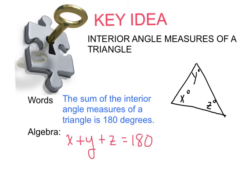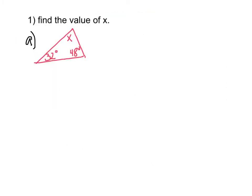So let's do three examples. Example number one, we're going to find the value of x. In example A, we have two angle measures which are 32 degrees and 48 degrees, and an angle measure of x degrees. We're going to start using equations. You know all three of these add up to 180, so you're going to write the equation: x plus 32 plus 48 equals 180.